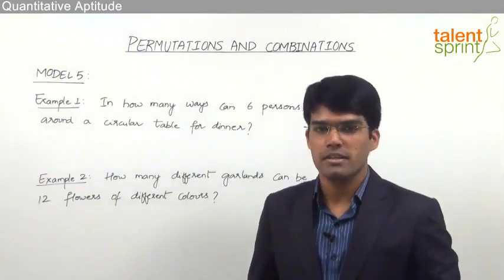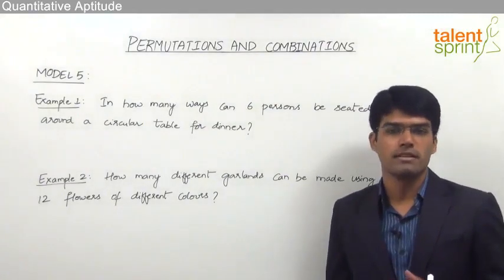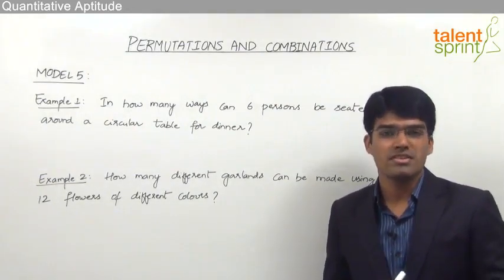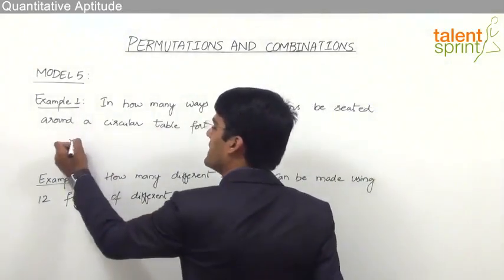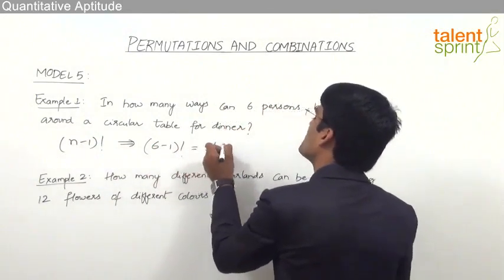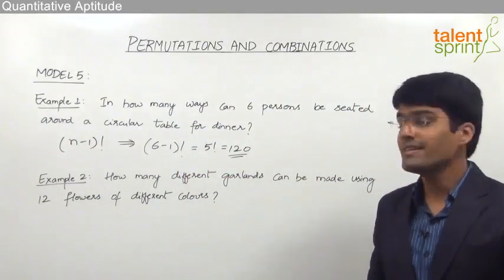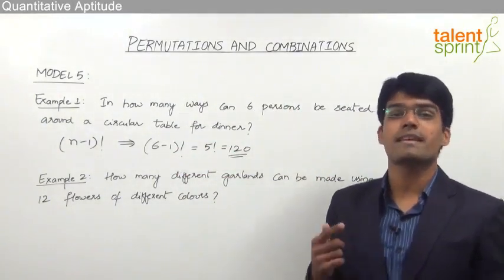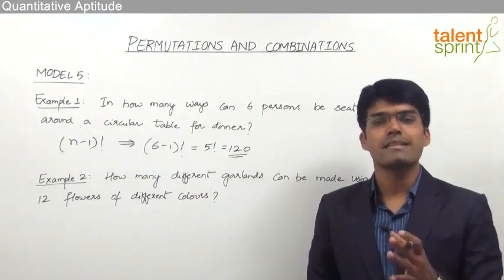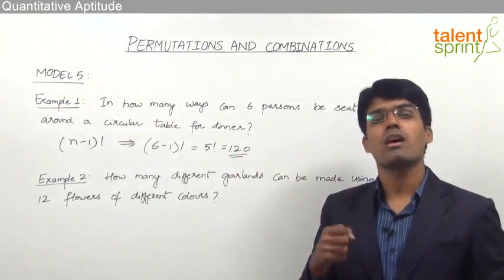The first example: in how many ways can 6 persons be seated around a circular table for dinner? We know the number of circular permutations is (n-1) factorial and n is 6. So the answer is (6-1) factorial = 5 factorial = 120. There are 120 different ways. Here clockwise and anti-clockwise are considered different, so the answer is (n-1) factorial.